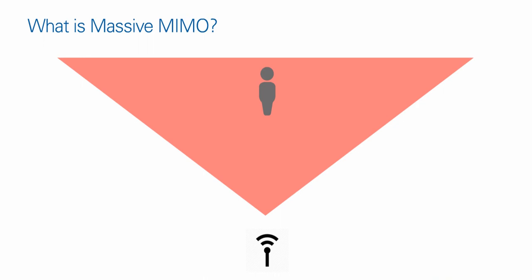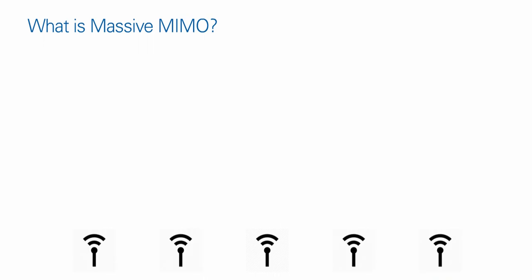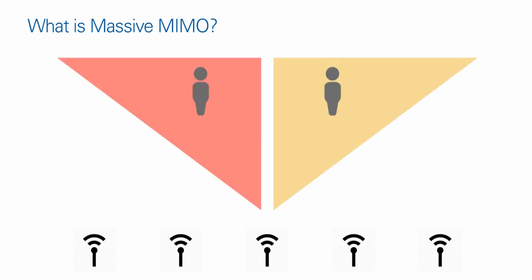By increasing the number of elements, we can do something called beamforming or beam splitting, which allows us to split our energy and direct it toward certain parts of the cell using the characteristics of a phased array of antennas. Using exactly the same channel, the same frequency, and the same bandwidth, we can focus that energy toward perhaps two different users — or at least a small number of users.